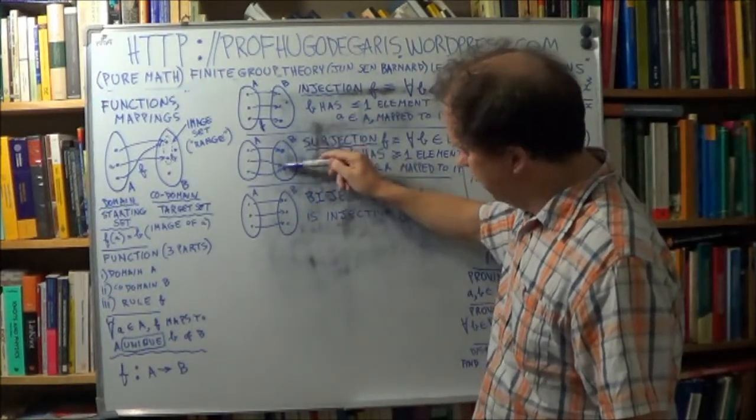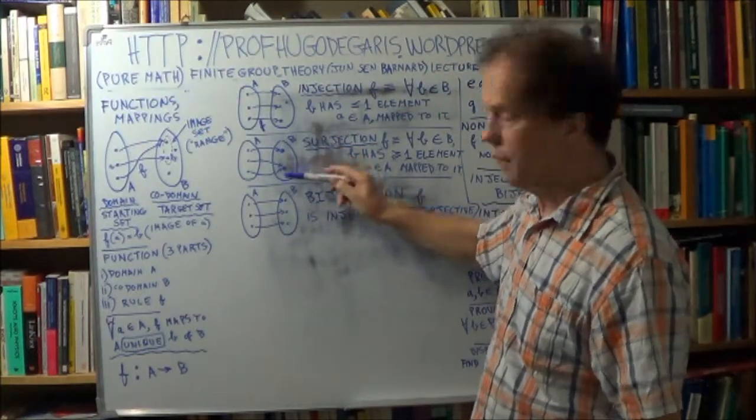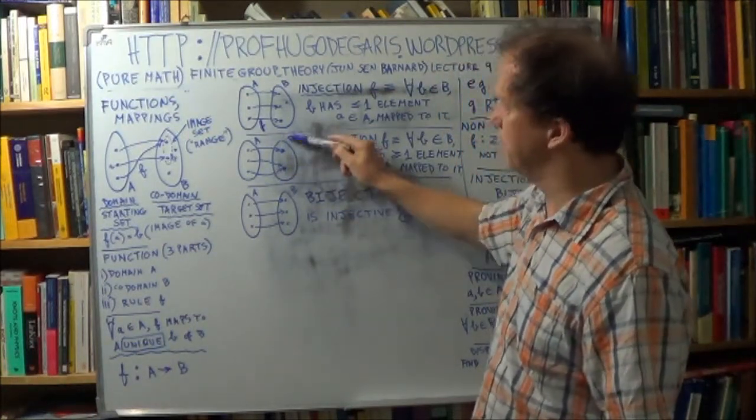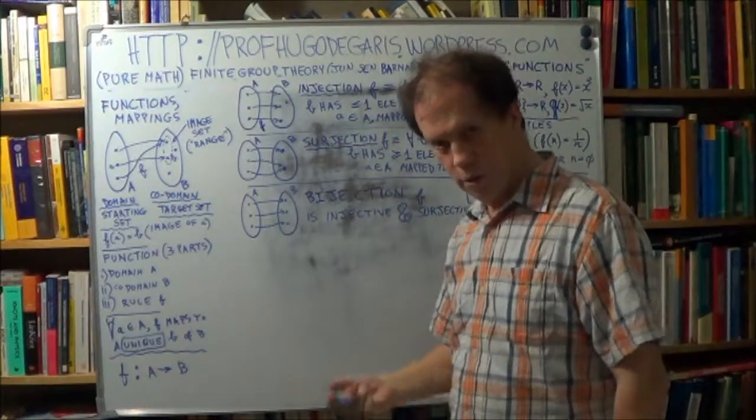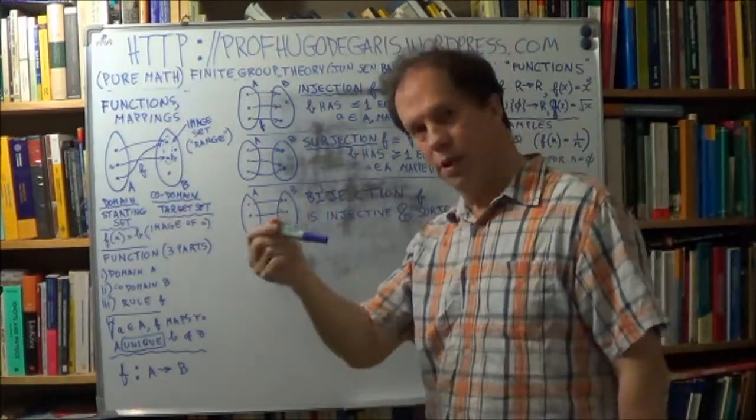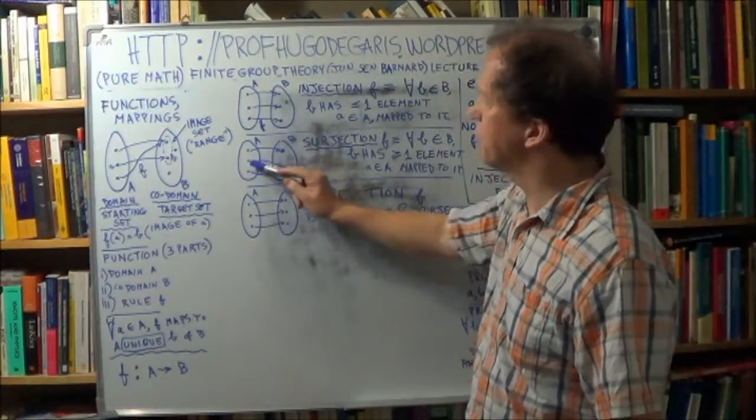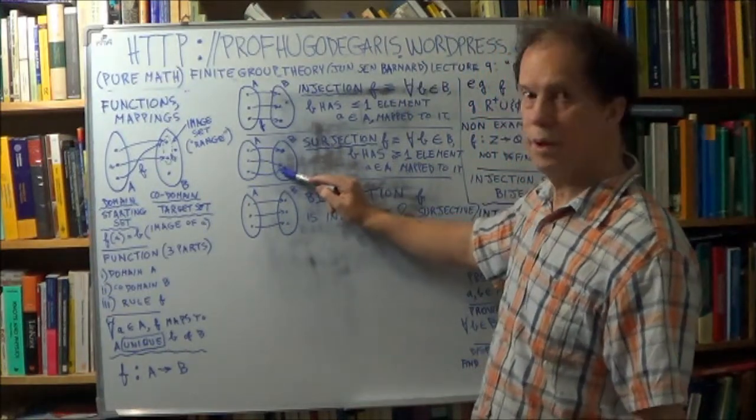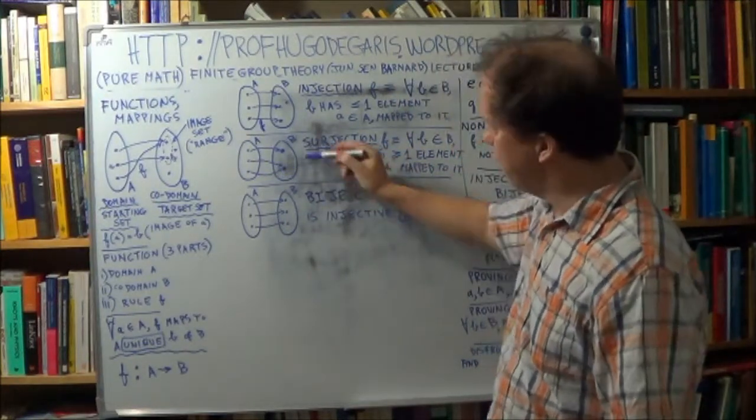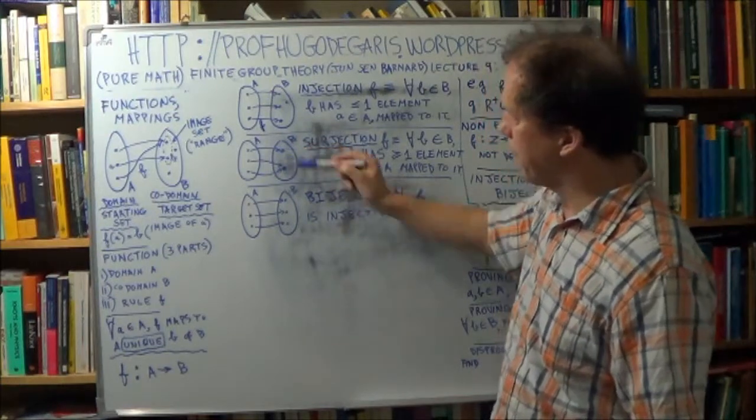So every dot here, every member of your target set B is mapped to. Every dot has an arrow, at least one, might have two. Like this element here has two arrows that map to it. But at least every dot here gets mapped to.